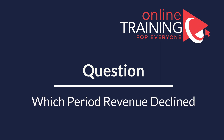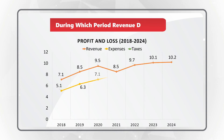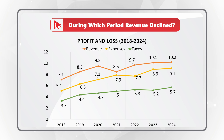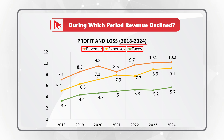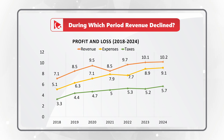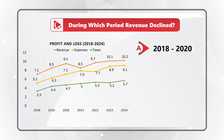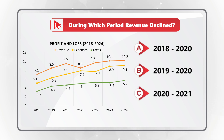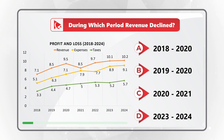Here is an unexpected question you might frequently see on the test. You need to determine during which period revenue declined. You're presented with a profit and loss chart covering periods from 2018 to 2024, with three lines representing revenue, expenses, and taxes. The choices are: A = 2018–2020, B = 2019–2020, C = 2020–2021, D = 2023–2024.